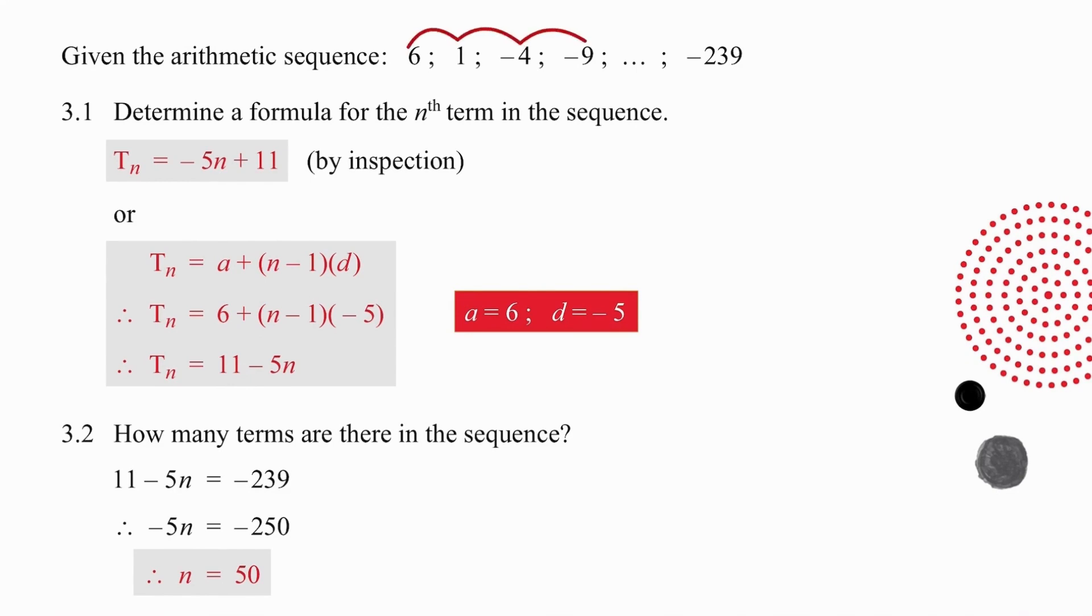Ideally, you want to save time in questions like this. So if you're up to the challenge and you remember the basics from earlier videos, you should be able to, by inspection, recognize that the terms are dropping off by 5 and that if you want to substitute and get 6, you're going to have to add 11. If that doesn't make sense, then fall back on A plus N minus 1D and check that you get the same answer as the answer that you have been given here. Minus 5N plus 11. So both methods are provided. Pause the video again and check both if you need to.